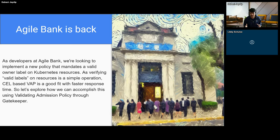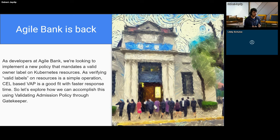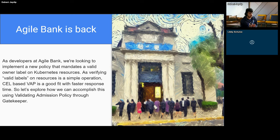Before going to the demo, I'm going to define a hypothetical use case where a bank called Agile Bank is looking to enforce a policy that requires resources to have a valid owner label. Since this is a simple requirement, we can use Common Expression Language-based validating admission policy to fulfill that requirement. So let's see how we can enforce this using Gatekeeper and VAP together. I'm going to stop sharing to go into the demo.